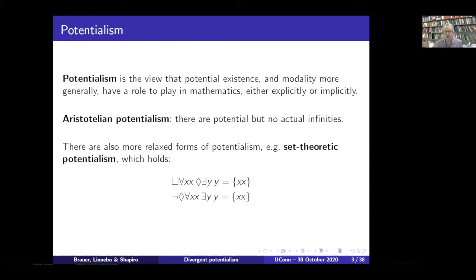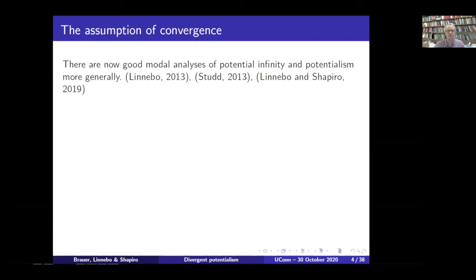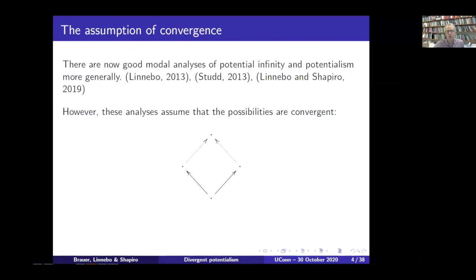Some of us have been interested in set-theoretic potentialism, which is the combination of claims on the slide here. Necessarily, however many objects you've got, possibly you can generate their set. But it's not possible to bring it about that any objects whatsoever in fact have a set. That combination of claims is known as set-theoretic potentialism. And there are now good analyses of potential infinity and potentialism more generally, to which various people including some of the people presenting here have contributed.